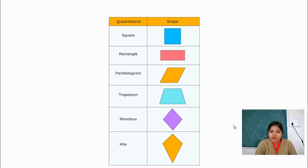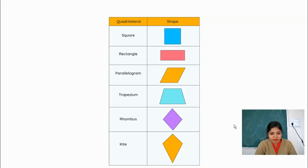So now there are quadrilaterals. These all are the types of quadrilaterals: square, rectangle, parallelogram, trapezium, rhombus, and kite. Kite is also an example of a quadrilateral. As I told you, a 4 sided polygon is called a quadrilateral, and these all are the types of quadrilateral.